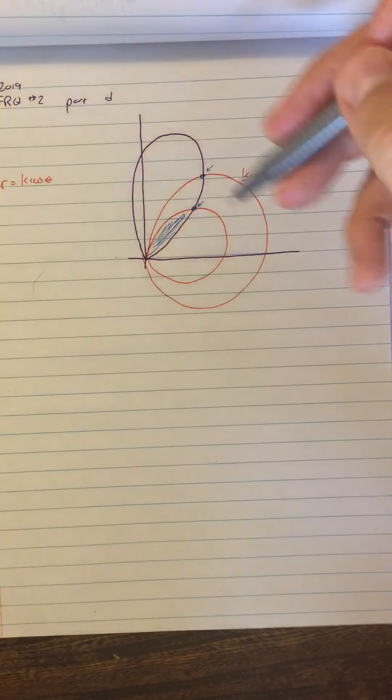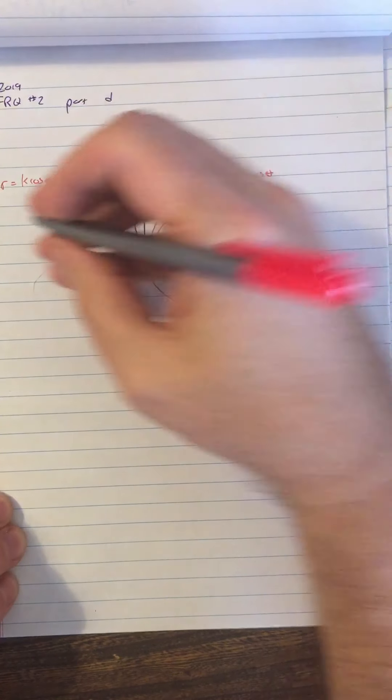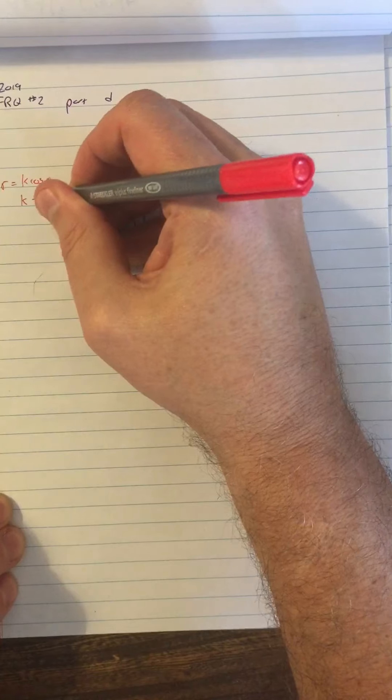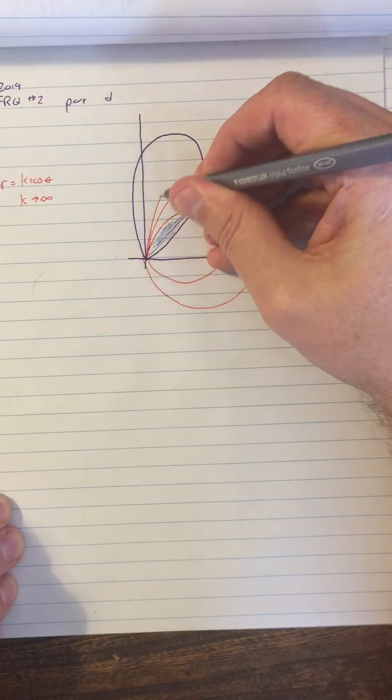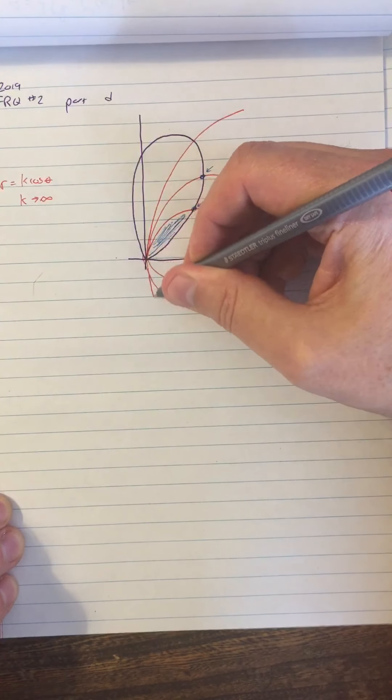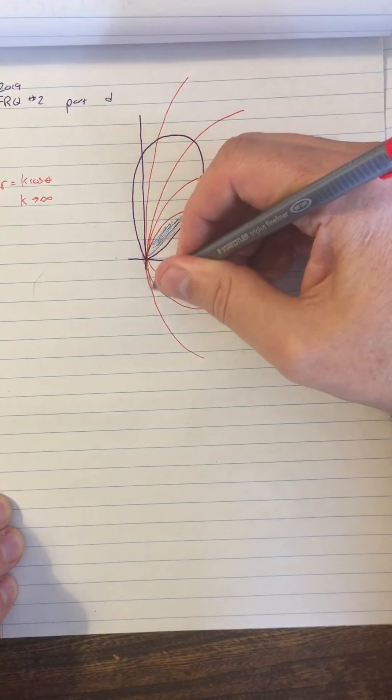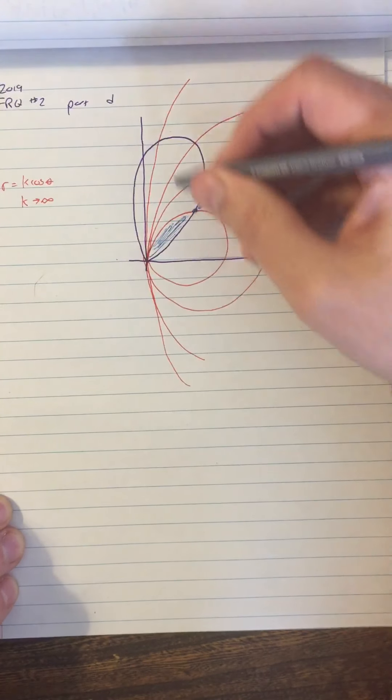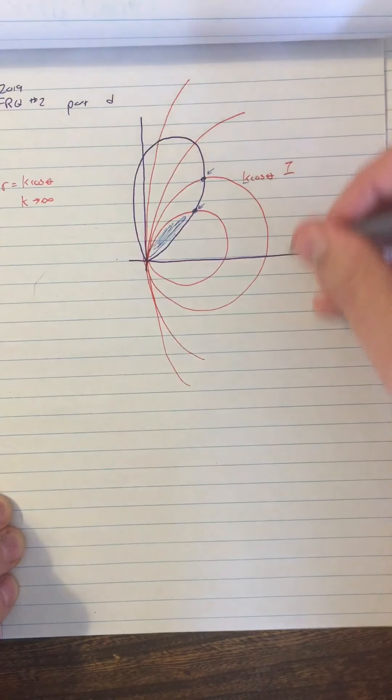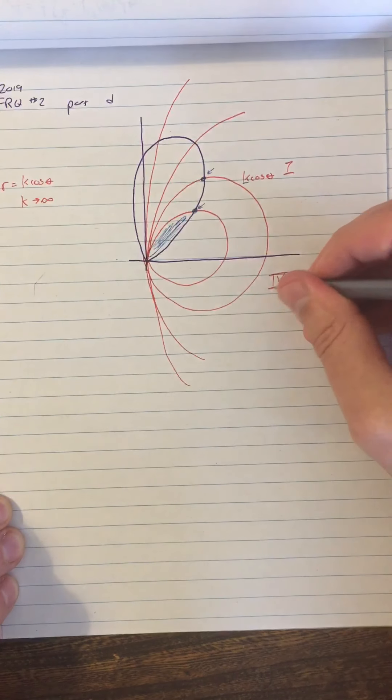So what they're really counting on you to notice instead is that as k approaches infinity, these circles get bigger and bigger and are always tangent to the y axis. So as the circles become infinitely large, they start to include all of quadrant one and quadrant four and nothing else.